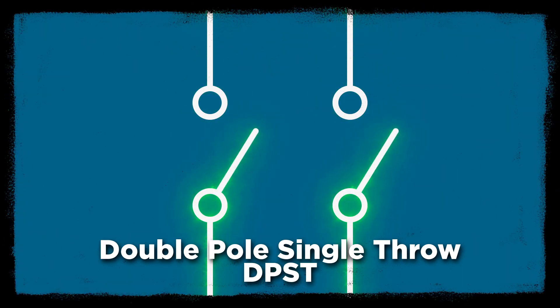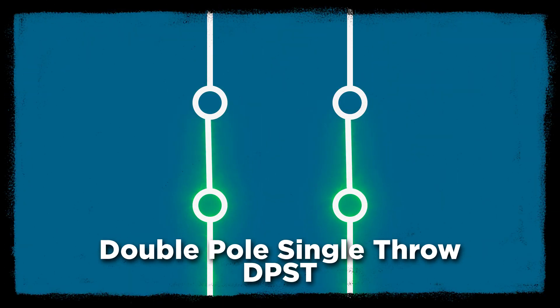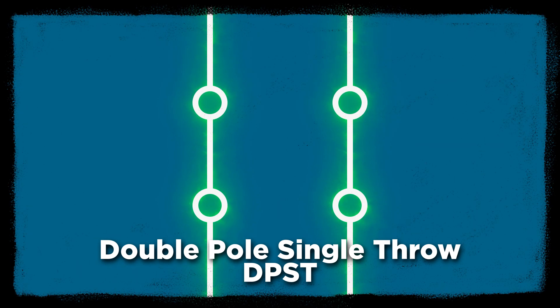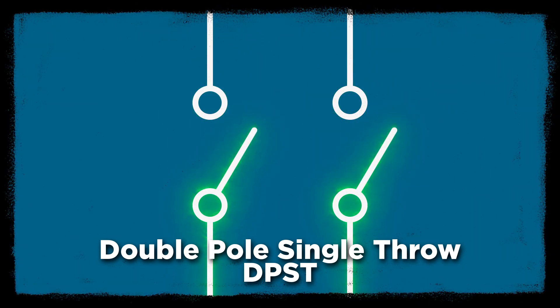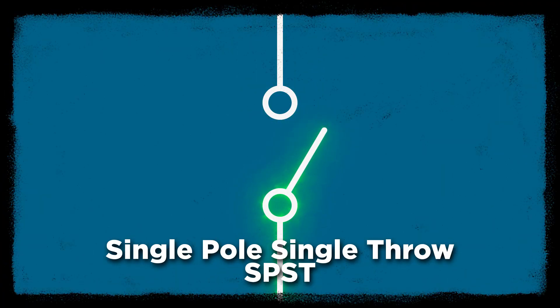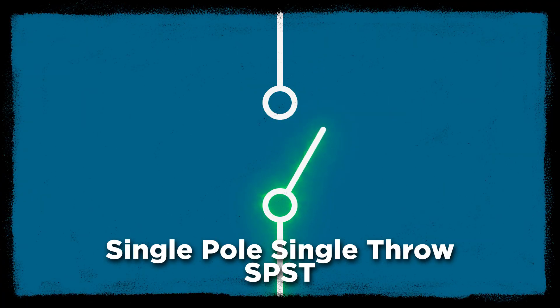A double pole will let you switch two devices on and off simultaneously. Note that poles cannot be controlled independently — they are both controlled by the same input signal. The number of throws a relay has, or more specifically a pole has, defines how many output contacts each pole in the relay can switch between. A single throw has one output contact per pole.